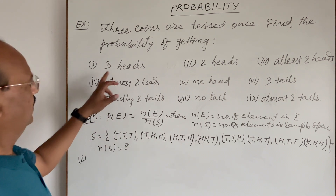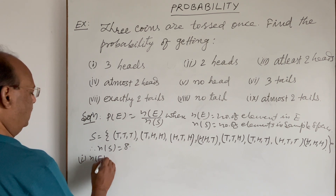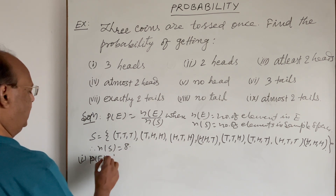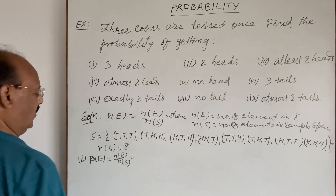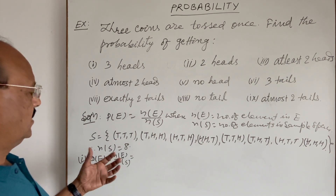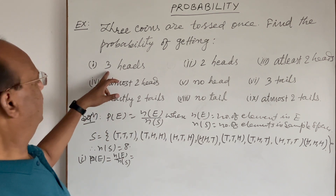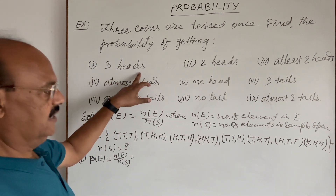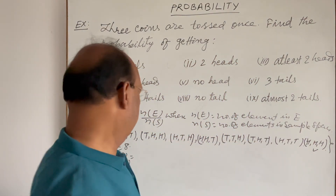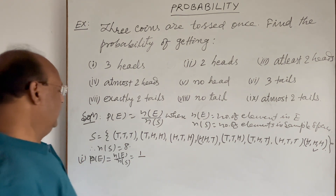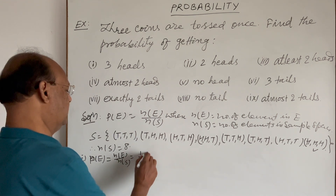First question: three heads. We use the formula P(E) = n(E) / n(S). The desirable outcome is three heads, and we have only one such element — H H H — so n(E) is equal to 1 and n(S) is equal to 8. Therefore the probability is 1/8.